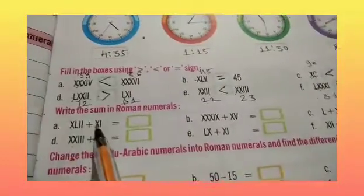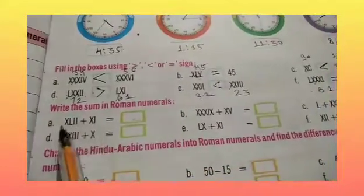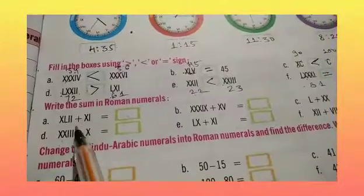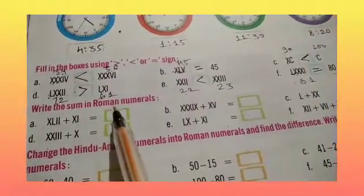Question number 5 में हमें roman numbers दिये गए हैं, उन दोनों को add करना है और add करने पर जो answer आए, उसे roman numbers में लिखना है.